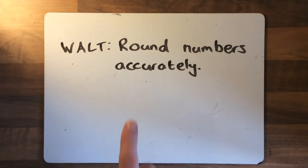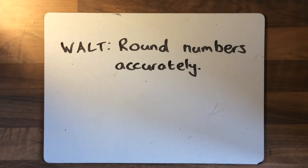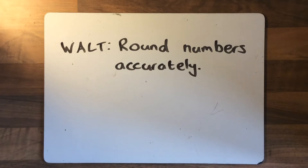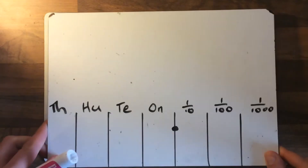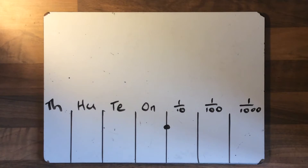So we are learning to round numbers accurately. This is one of the first things that we did in Year 6 this year, something that you would have done previously as well in other years — to round numbers accurately. And it's a really useful skill to be able to do. So what we have here is a place value chart. We would have seen these many, many times in school, especially in Year 6.